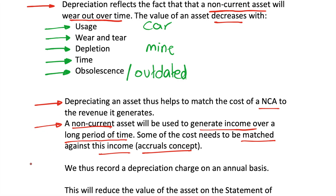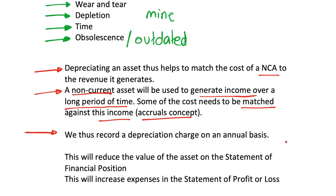We need to record a depreciation charge on an annual basis — so every year we apply some depreciation. How much has our asset decreased in value over the course of a year? This allows us to better reflect how much income the asset is producing. Over time, as our asset gets worn out and depleted, it might actually earn us less income, so we need to reflect that by reducing the asset's value.